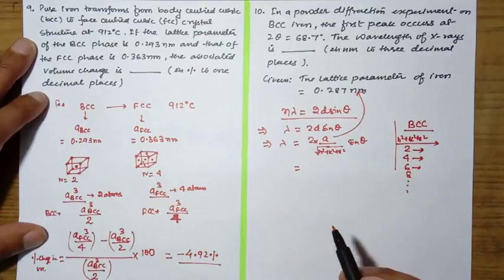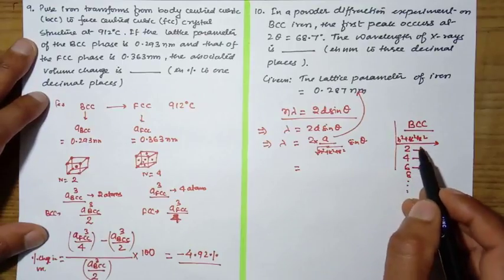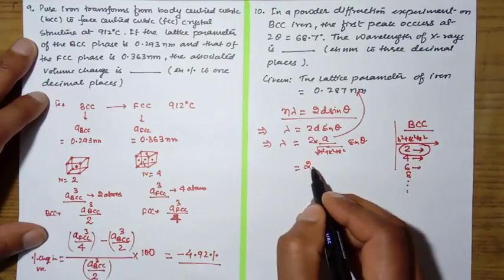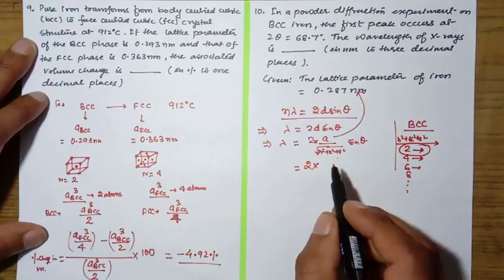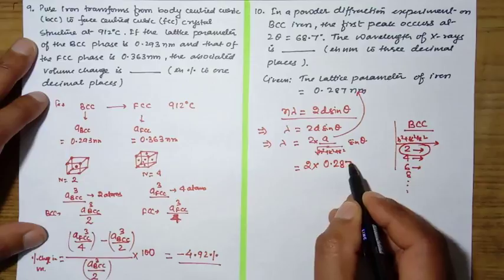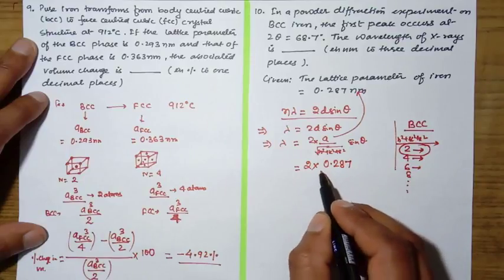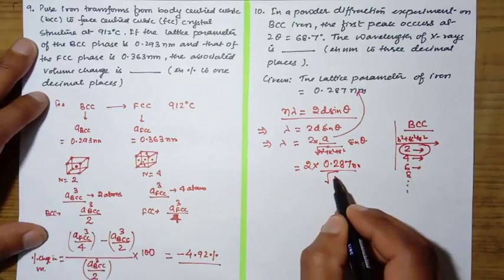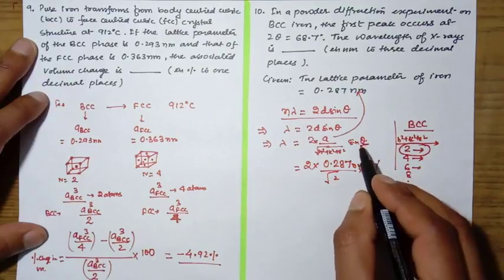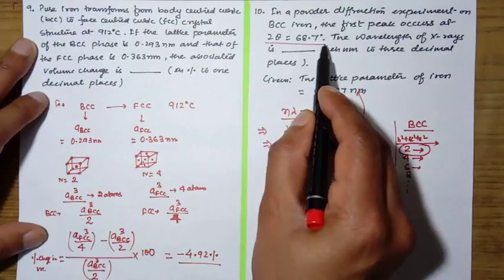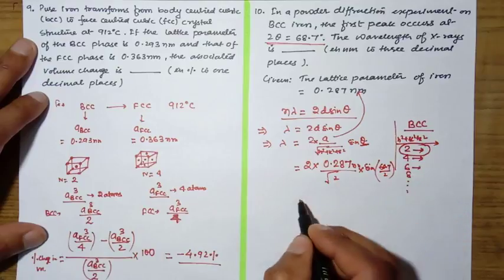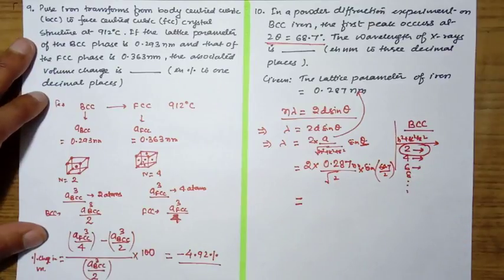So λ = 2 × (0.287 nm / √2) × sin(68.7/2 degrees). Here 2θ is given as 68.7, so θ is 68.7 divided by 2. If you calculate this, the value comes around 0.229 nanometer.